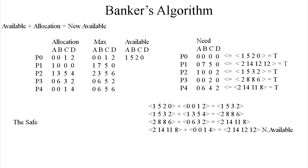And there we have it — that is the safe sequence. It's going to be exactly in the order we went: P0 first, then P2, then P3, P4, and then P1. That is the safe sequence. Hopefully that made sense and you were able to easily follow along. Thanks a lot for watching — I really do hope you enjoyed it.